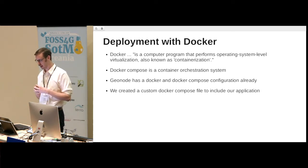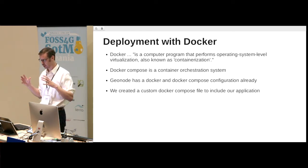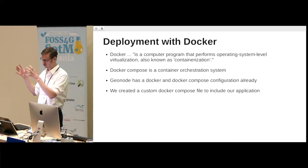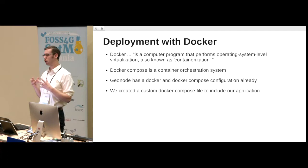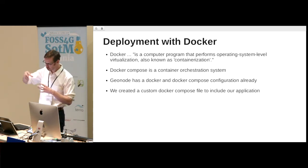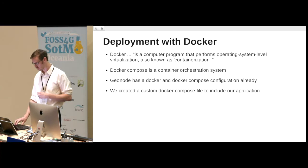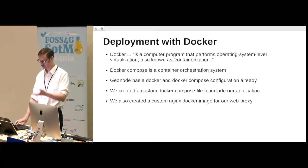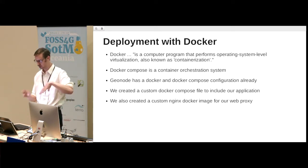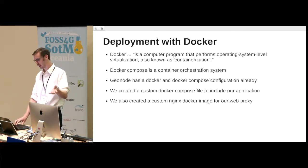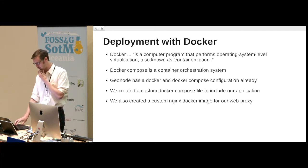All we had to do was take the GeoNode Docker Compose file and make our own version that included our observatory application as an additional component. We also created a custom NGINX Docker image for our web proxy, including various proxying aspects — again, taken from the default GeoNode setup and modified.